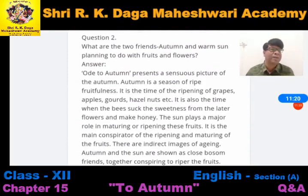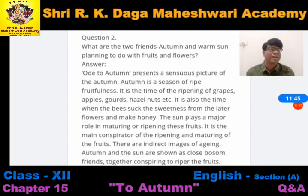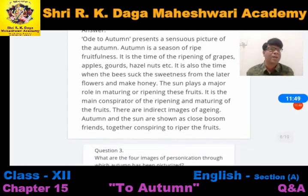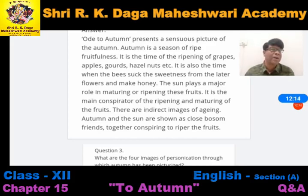What are the two friends — autumn and warm sun — planning to do with fruits and flowers? 'Ode to Autumn' presents a sensuous picture of the autumn season. Autumn is the season of ripe fruitfulness and the ripening of grapes. It is also the time when bees suck the sweetness from the later flowers and make honey.